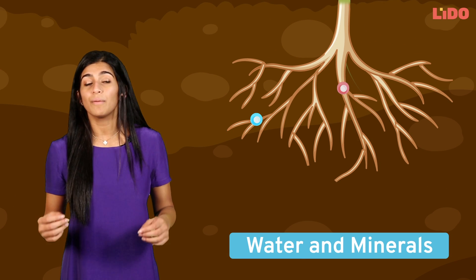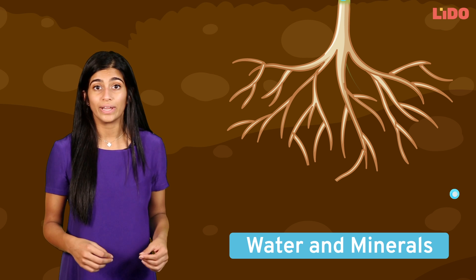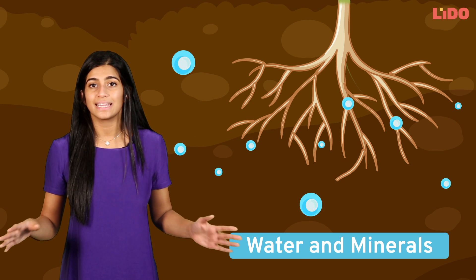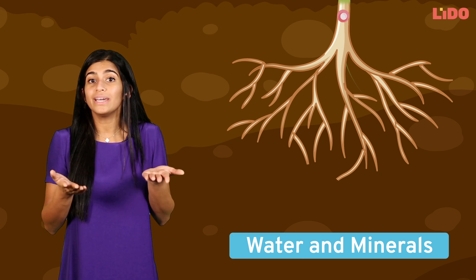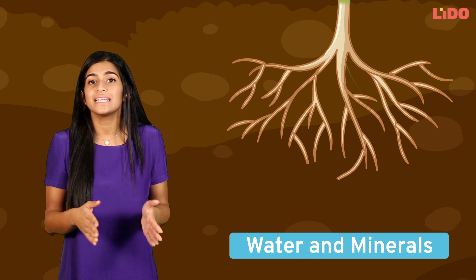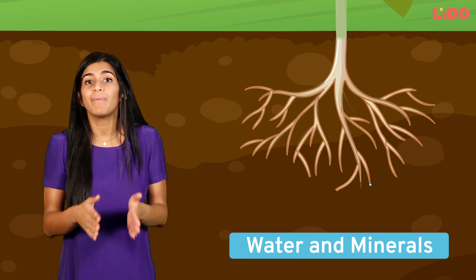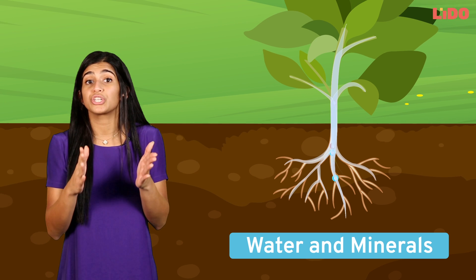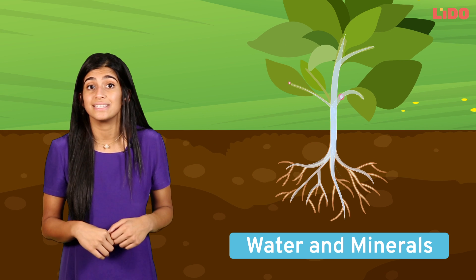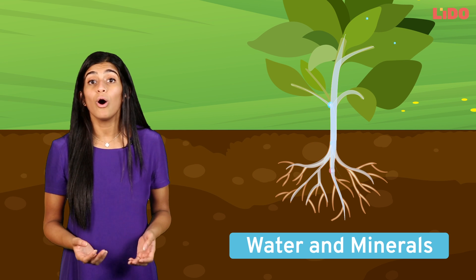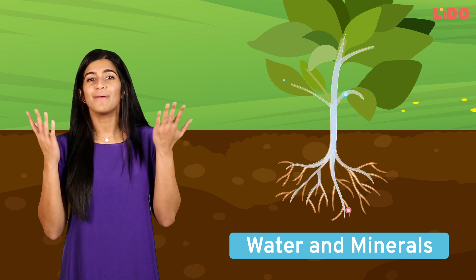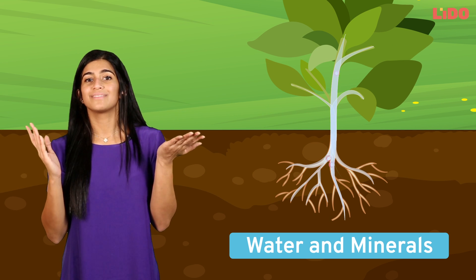Water and minerals are present in the soil and get taken in by the roots. From here, the continuous path of pipe-like structures called vessels transport the water all the way up to the leaves.